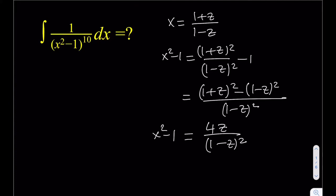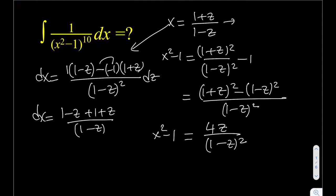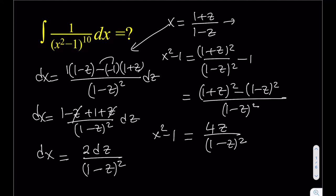Now let's calculate dx. We don't need to solve for z yet — we'll do that at the end. Taking the derivative of x = (1 + z)/(1 - z) using the quotient rule: the derivative of (1 + z) is 1, times the bottom, minus the derivative of the bottom (-1) times the top, all over the bottom squared. Simplifying gives dx = 2 dz / (1 - z)².